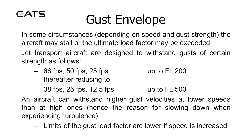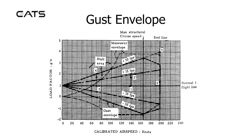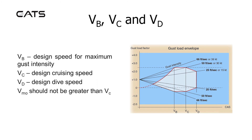Limits of the gust load factor are lower if speed is increased. Here is a real example of a gust envelope diagram, with the manoeuvre envelope superimposed. Gusts of plus and minus 15 and 30 feet per second are shown, starting from the 1g load factor, while the manoeuvring envelope starts from the 0g load factor. From the gust load envelope, the speeds VB, VC and VD can be determined. VB is the design speed for maximum gust intensity, VC is design cruising speed, and VD is design dive speed. VMO should not be greater than VC.